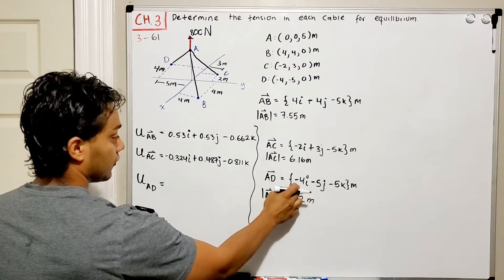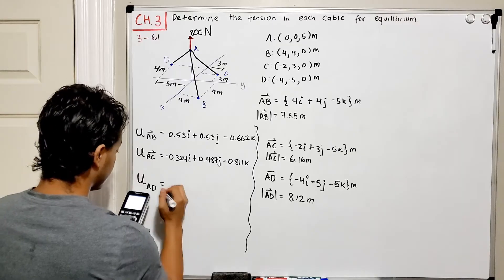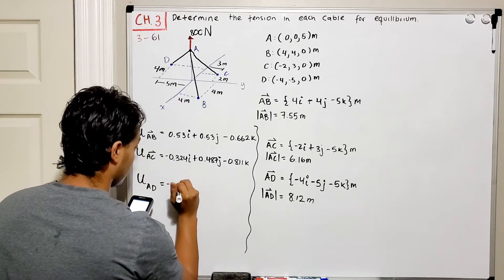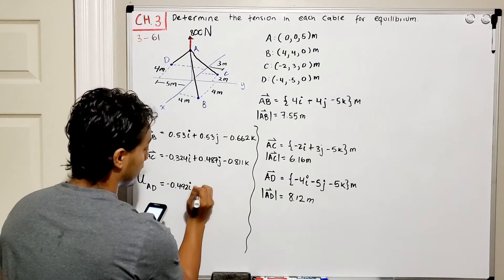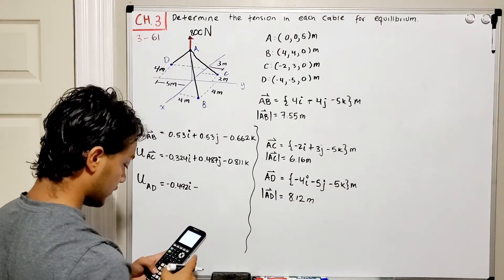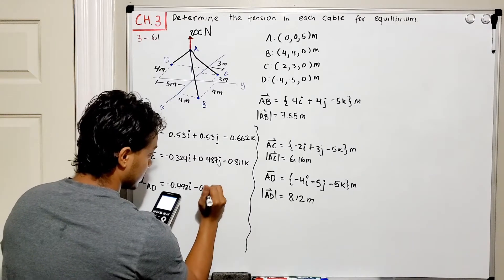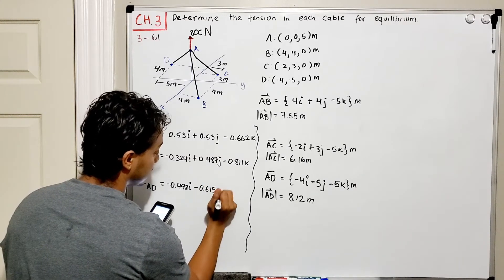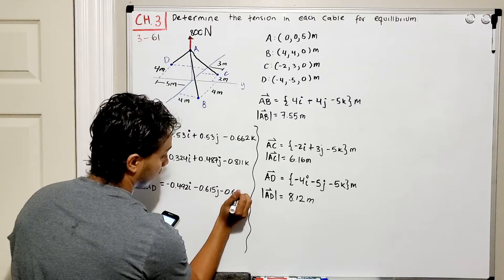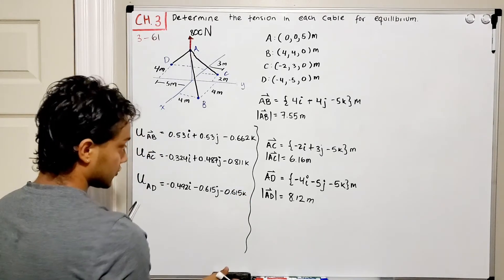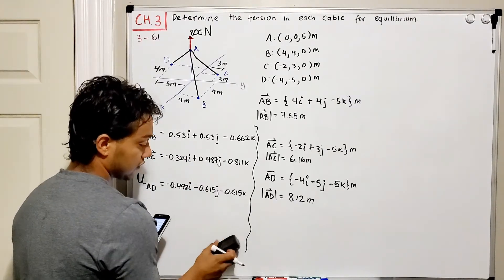The unit vector for cable AD: negative 4/8.12 = negative 0.492 in the I direction, negative 5/8.12 = negative 0.615 in the J direction, and negative 5/8.12 = negative 0.615 in the K direction. Now we have all three unit vectors.